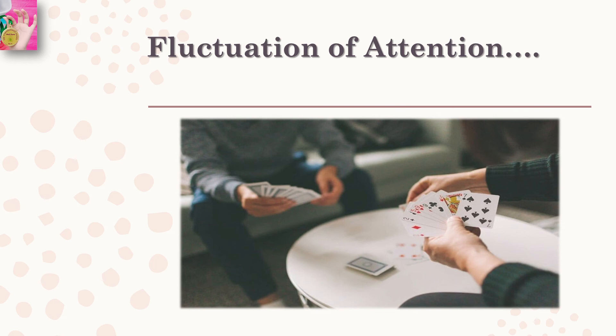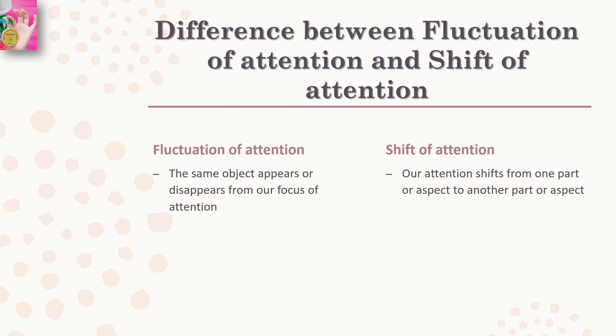The basic difference between fluctuation of attention and shift of attention is that in the former case the same object appears or disappears from our focus of attention, while in the latter case our attention shifts from one part or aspect to another part or aspect. This is the main difference between fluctuation of attention and shift of attention.